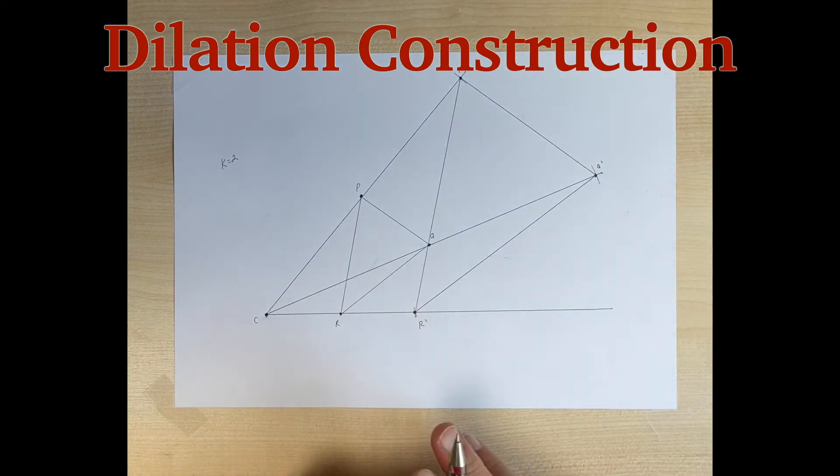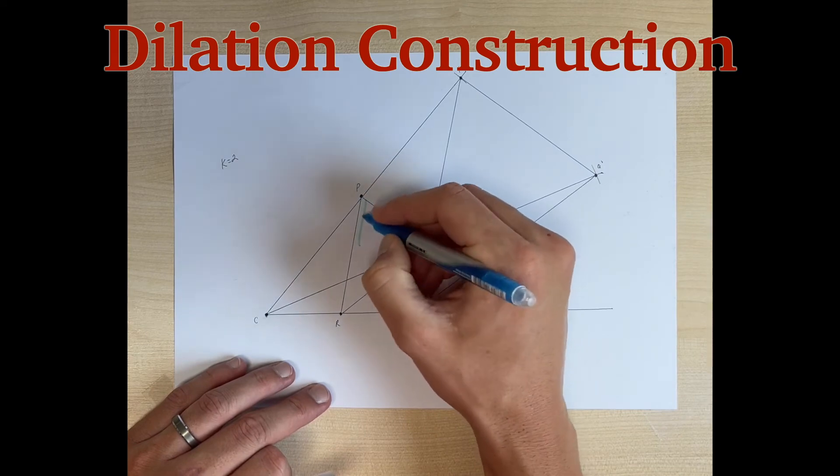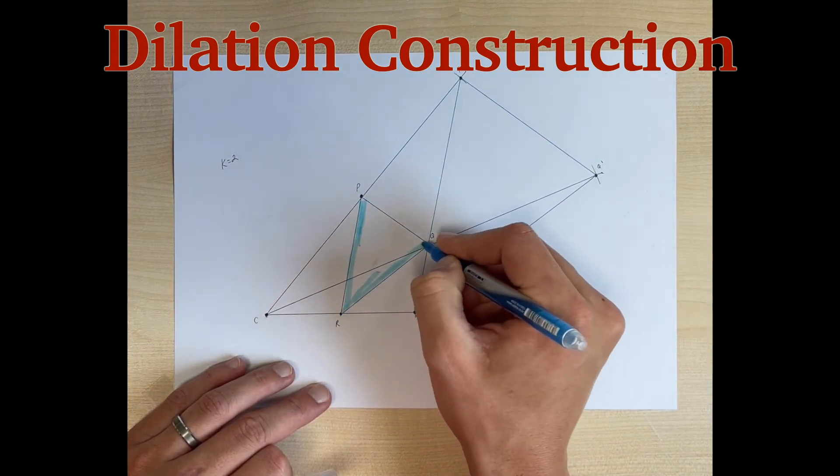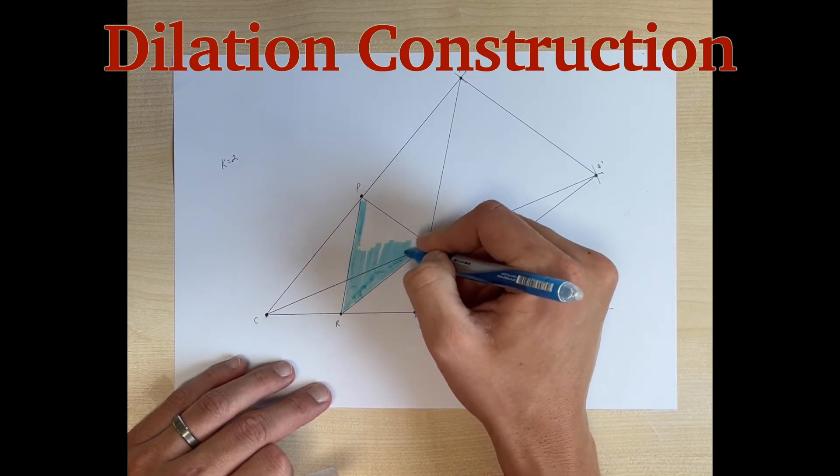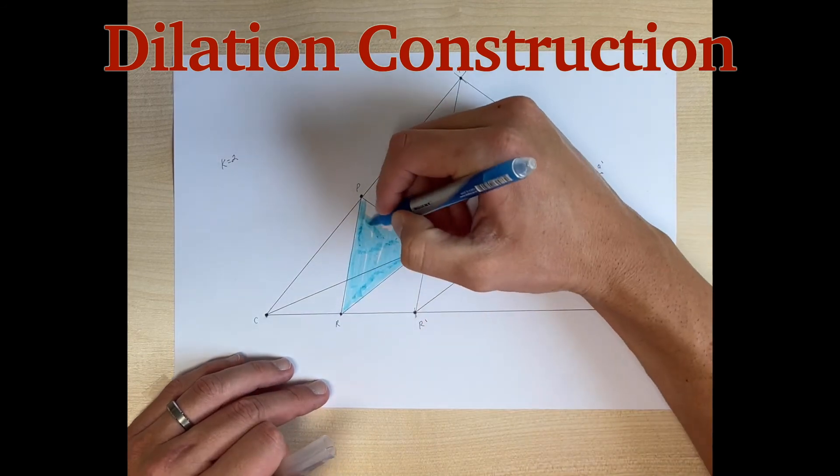Now we have our dilated shape. If we wanted to maybe add a little bit of color to that, just to kind of show the two different shapes. Here was our pre-image, or our original shape. Sometimes I'll call this like the old shape. Old shape, original shape, pre-image.